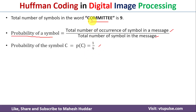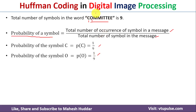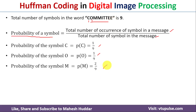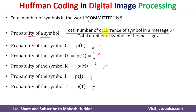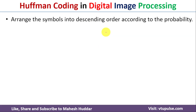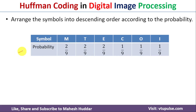Similarly, the symbol O appears only once in the word, so the probability of O equals 1 divided by 9. The symbol M appears two times, so the probability of M equals 2 divided by 9. We will similarly find the probability of the remaining symbols. Once you find all probabilities, we assign them in descending order, as shown here.